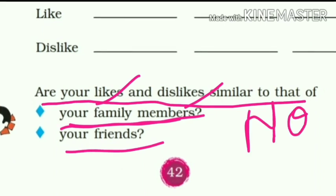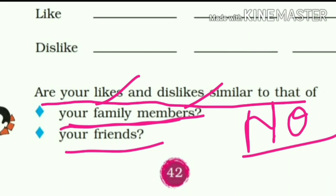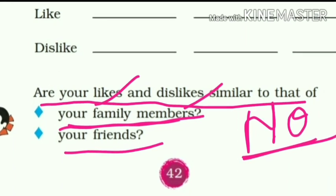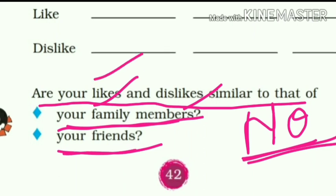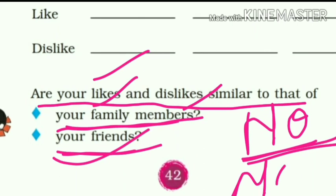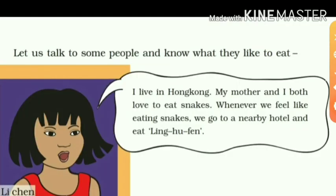In your family, many things that you eat others may not like, and what they eat you may not like — so likes and dislikes cannot be similar. What your friends like may not be what you like. You can see there are three friends who are talking about this, so let us read and find out what they are talking about.